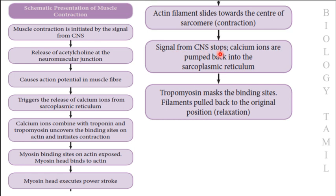When the signal from the central nervous system stops, calcium ions are pumped back into the sarcoplasmic reticulum. Tropomyosin then masks the binding sites on actin, and the filaments are pulled back to their original position — that is relaxation.